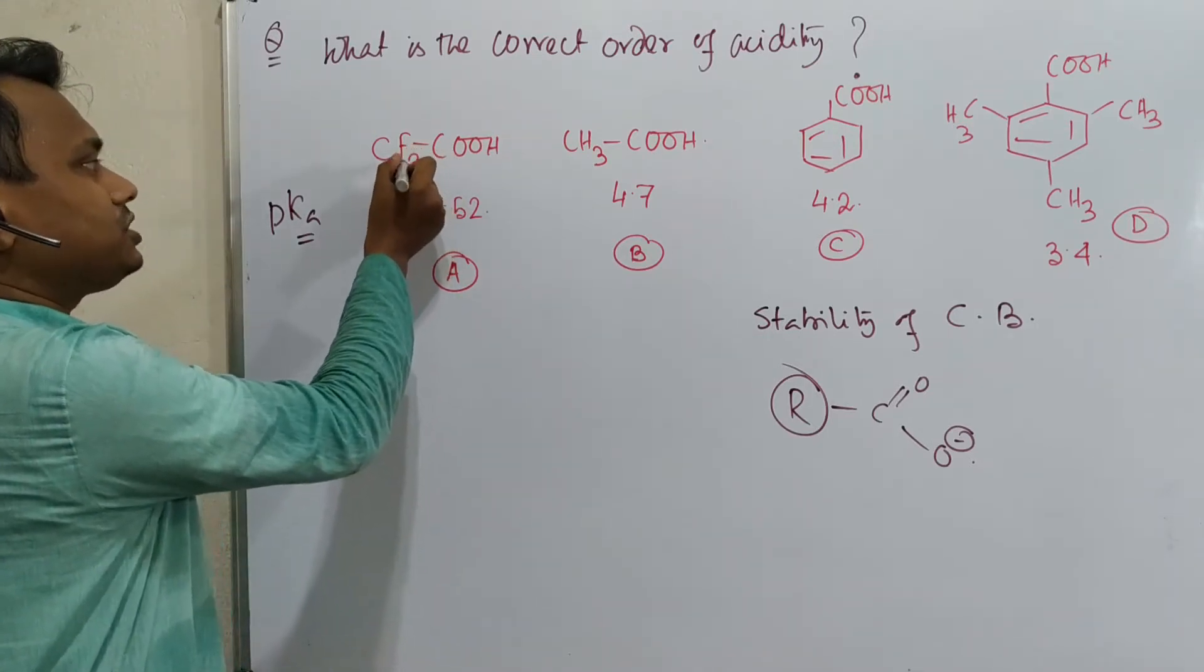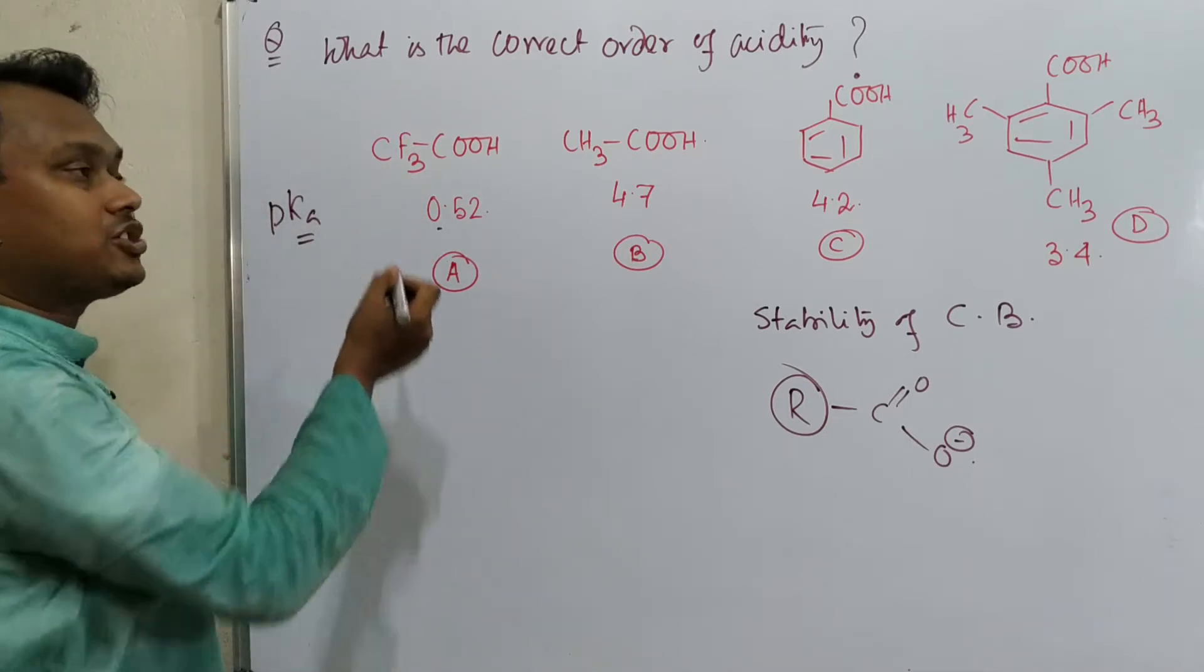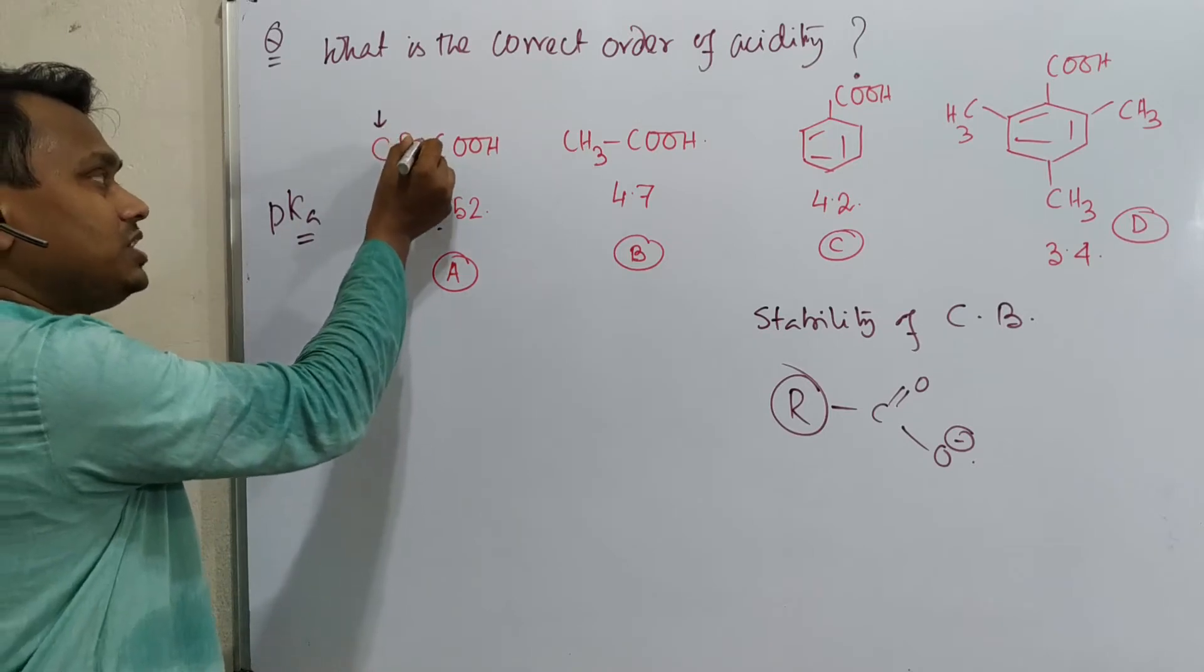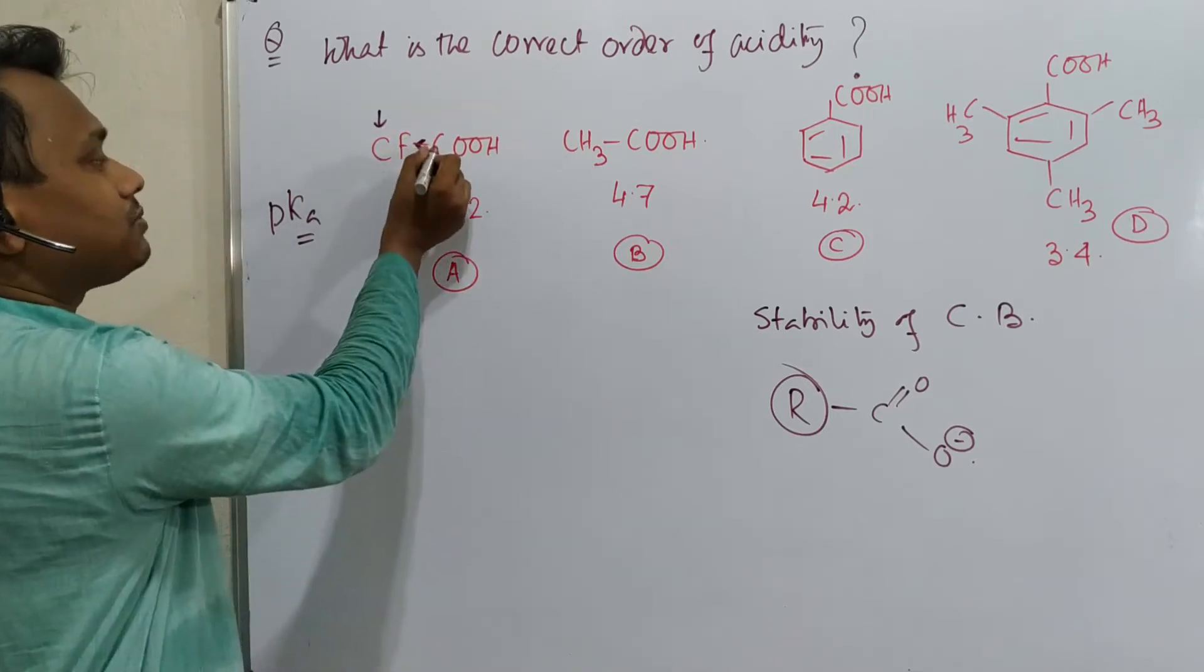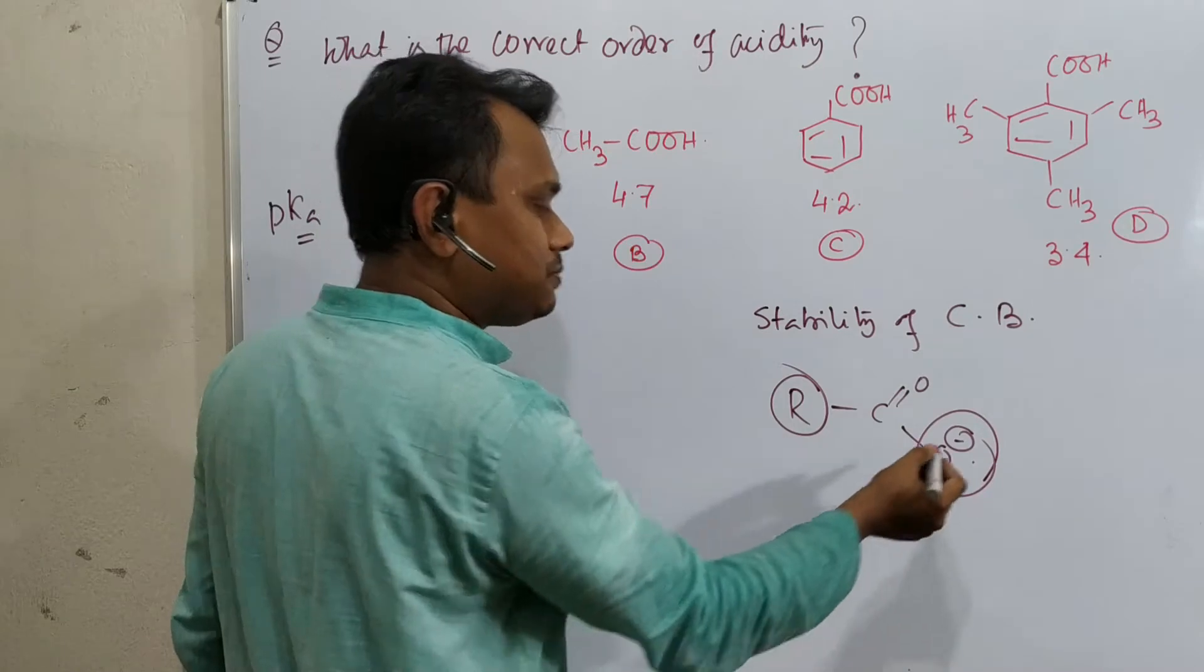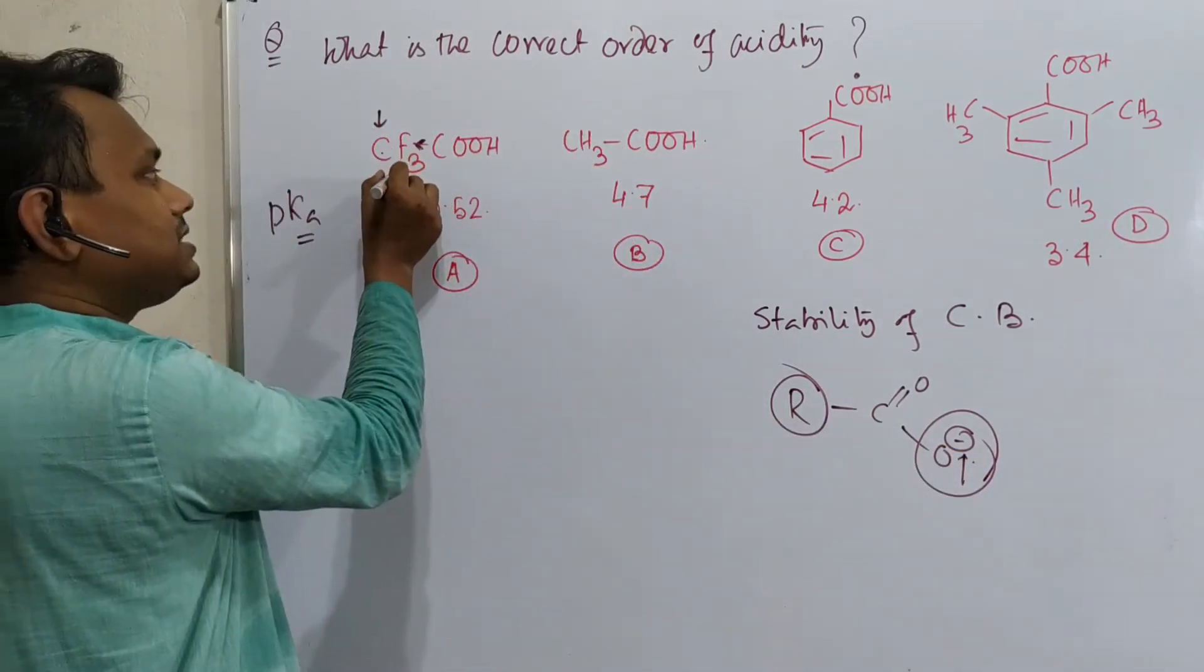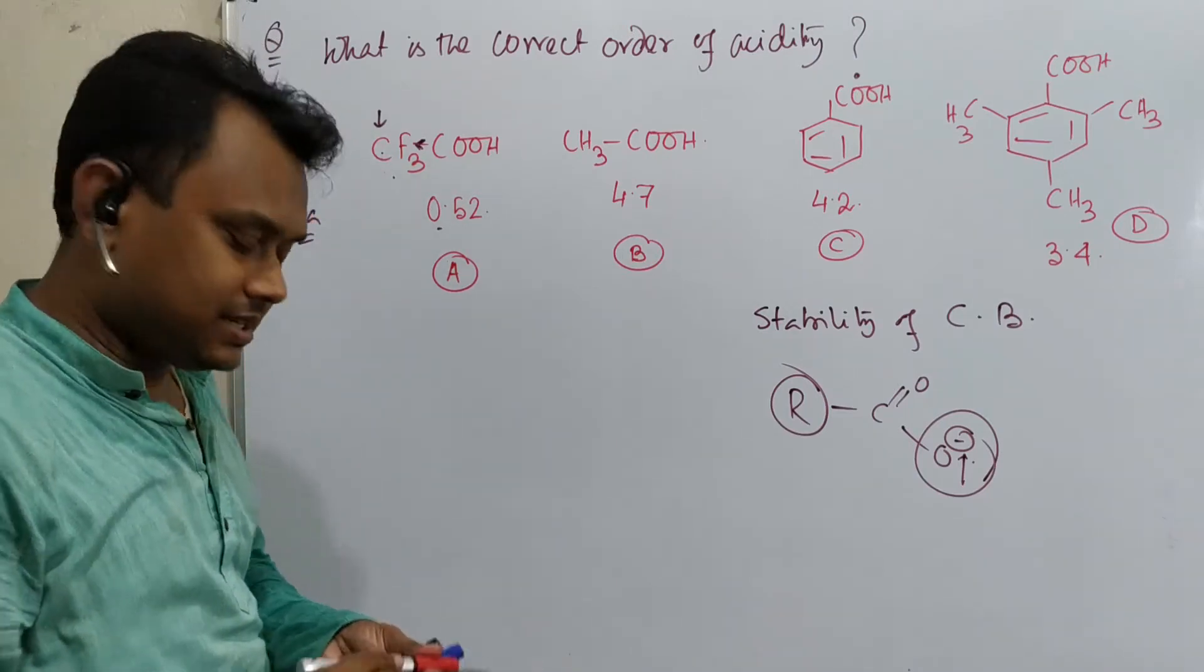First of all, in this case, CF3, this fluorine is the most electronegative atom and it withdraws electron efficiently. Consequently, this carbon became very much electron deficient. So it also withdraws electron density from this carbon through sigma bonds. Consequently, the corresponding conjugate base is stabilized because here electron density is excess and CF3 is withdrawing. Withdrawing means delocalizing, means stabilizing.